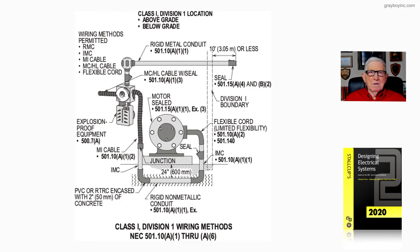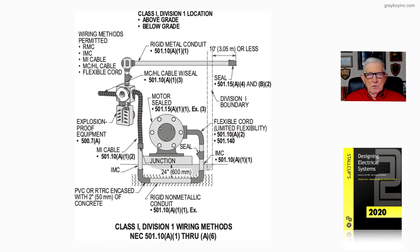When wiring explosion-proof equipment in a Class 1 Division 1 location, the wiring methods are in 501.10A, the seals are in 501.15A, and for motors it's 501.125. You could also use a purged and pressurized type motor per NFPA 496 — sweep it with 10 volumes of air, purge it well, then pressurize it. This is useful where an explosion-proof motor isn't convenient or available.